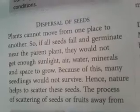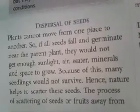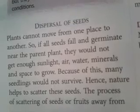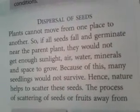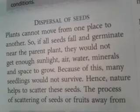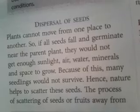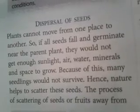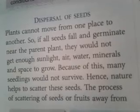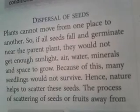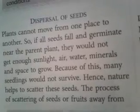If all seeds fall and germinate near the parent plant, means the main plant — the seeds fall in the same place and germinate. If all seeds fall there, it will be very congested, a small area, and there will be very many plants trying to grow there.